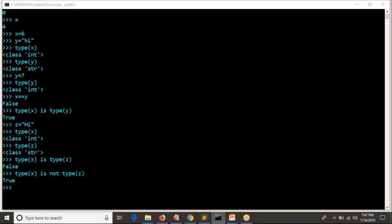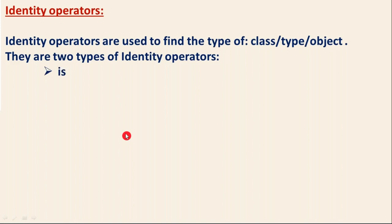So in identity operators we have two types: 'is' and 'is not'. Simply remember that identity operators are used to find the type of your variable or object. For now, if you find the type of some variable you will get either integer, float, complex, string, or byte.